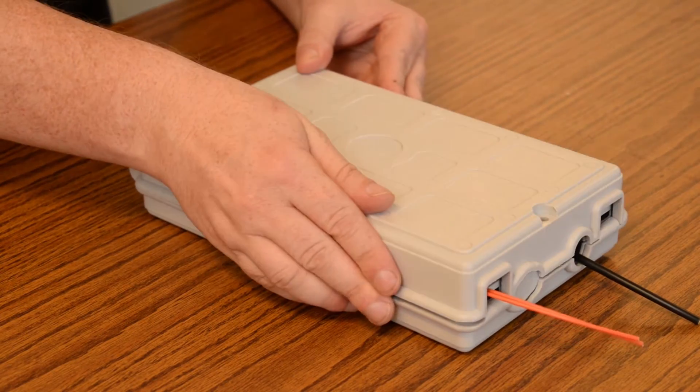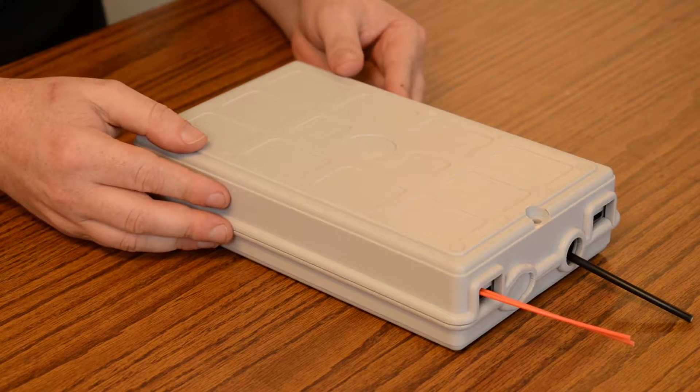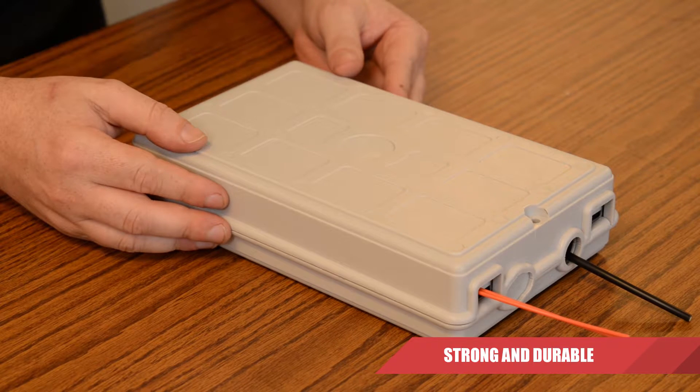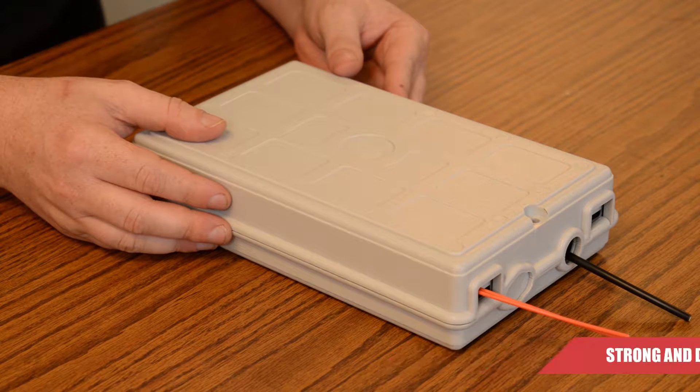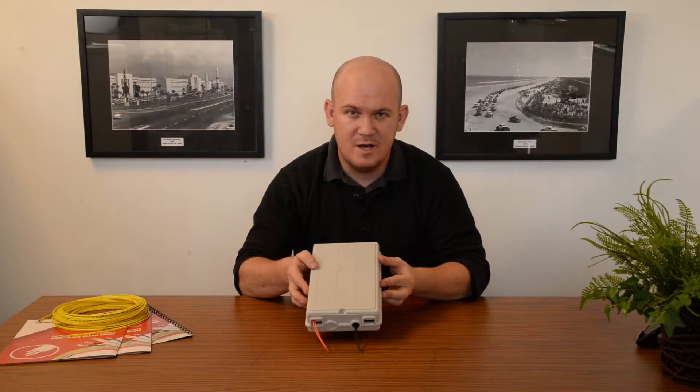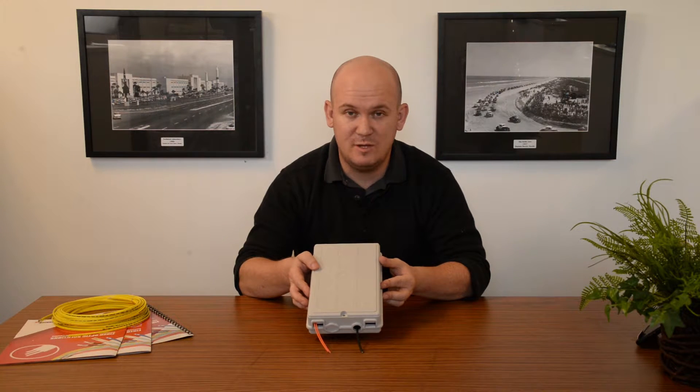While the box is primarily for indoor use, it is still made of a high-grade polycarbonate plastic which allows great strength and durability. That was our 12 fiber, two port, two splice tray wall mount termination box.